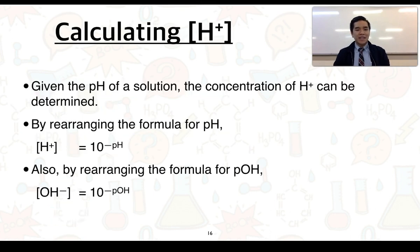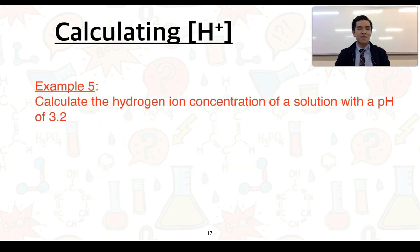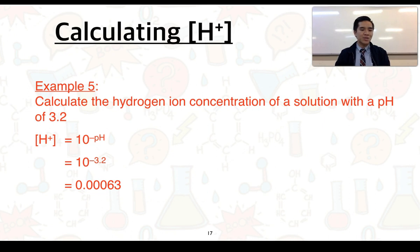Using the two formulas, we can rearrange to solve for ion concentrations when given pH or pOH. The concentration of hydrogen ions equals 10 to the power of minus pH, and the hydroxide ion concentration equals 10 to the power of minus pOH. Example 5: calculate the hydrogen ion concentration of a solution with a pH of 3.2. Using [H⁺] = 10⁻³·², we get 6.3 × 10⁻⁴ mol/L.